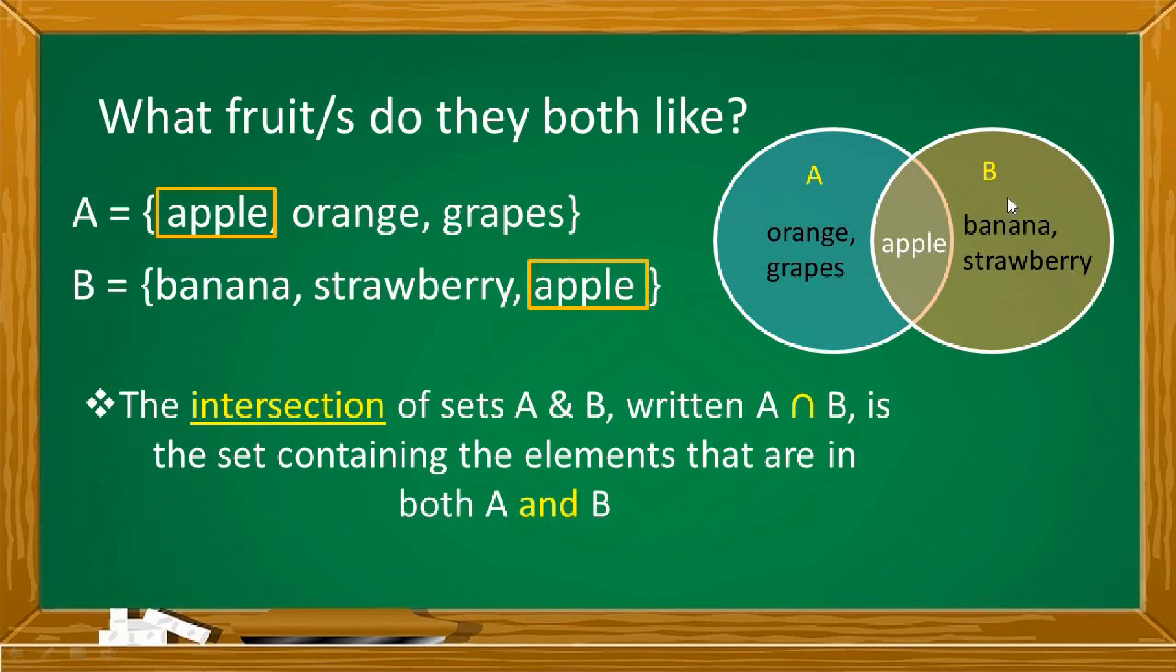And the second circle represents set B with elements banana, strawberry, and apple. Dahil pareho nilang favorites si apple, si apple ay lalagay natin sa gitna ng dalawang sets na nag-overlap o magkapatong. This portion is the intersection of these two sets.